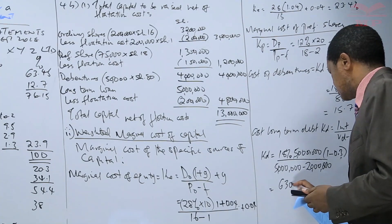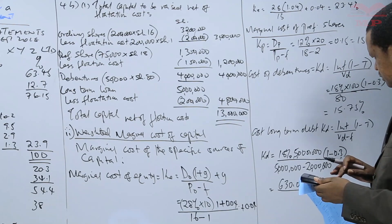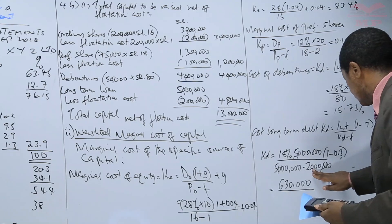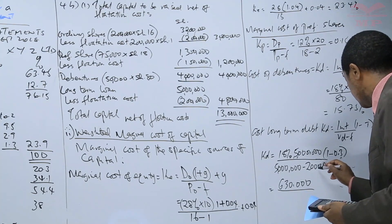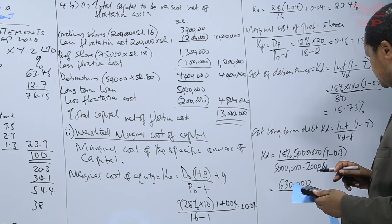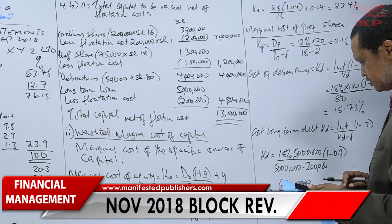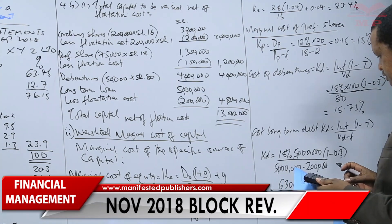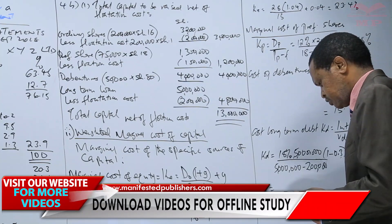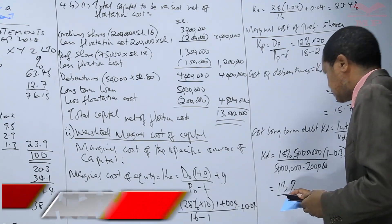So 630,000 divided by 4,800,000 — the calculator gives us 0.13, which is equal to 13%. That is the marginal cost of long-term debt.